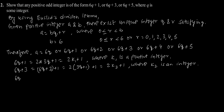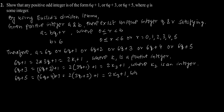Now considering 6q plus 5: this can be written as 6q plus 4 plus 1, which equals 2 into (3q plus 2) plus 1. Putting k3 instead of 3q plus 2, we get 2k3 plus 1, where k3 is an integer. This is also of the form 2k plus 1, which is odd.